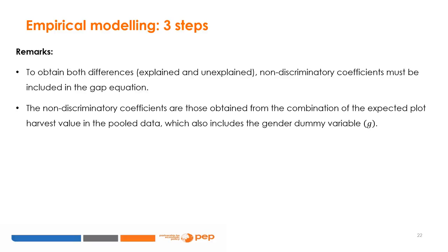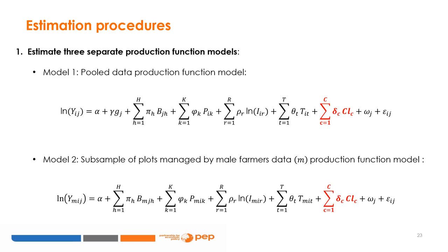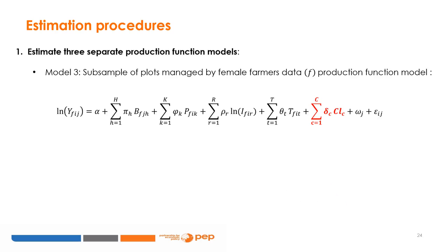To obtain both differences — explained and unexplained — non-discriminatory coefficients must be included in the gap equation. The non-discriminatory coefficients are those obtained from the combination of the expected plot harvest value in the pooled data and the gender dummy variable G. To apply estimation in the first step, three separate production functions are estimated: Model 1 using the pooled data production function, Model 2 using the subsample of plots managed by male farmers (M) production function model, and Model 3 using the subsample of plots managed by female farmers (F) production function model.